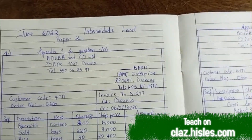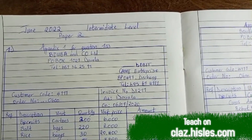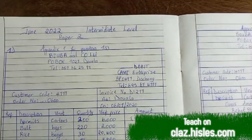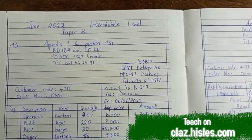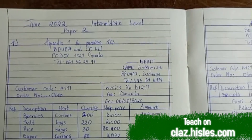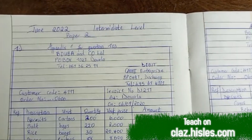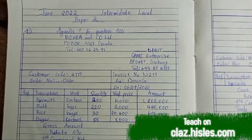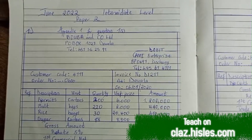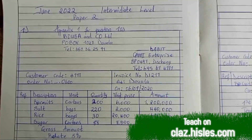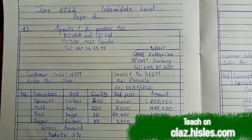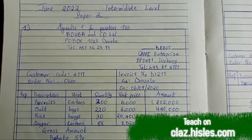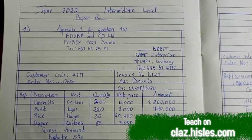Greetings everyone, welcome to the solution to GCE 2022 intermediate level, paper two. I'll be explaining the solutions. Question one was an invoice, and we were asked to present an invoice, which we did. We can notice that the supplier is Booba and Co Limited and the customer is Coming Enterprise.